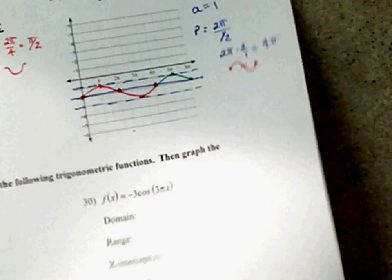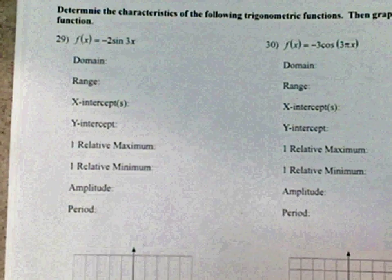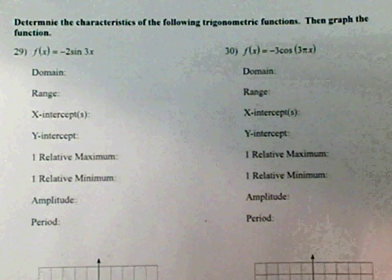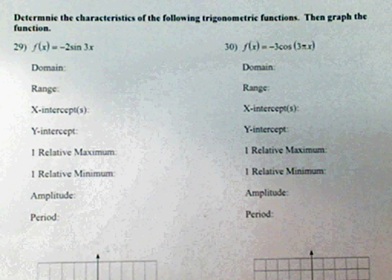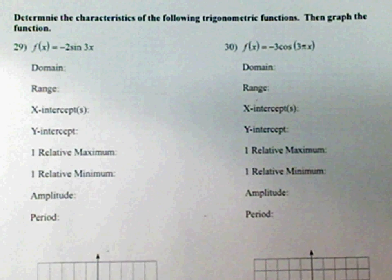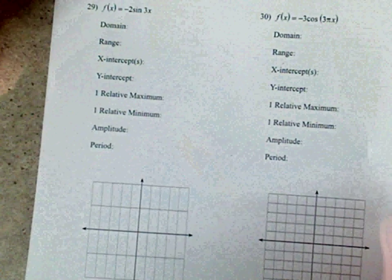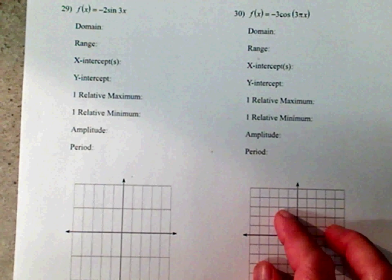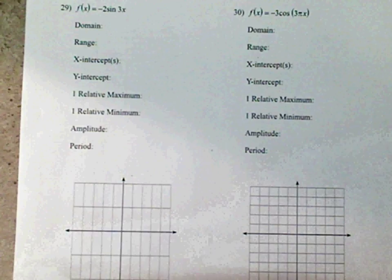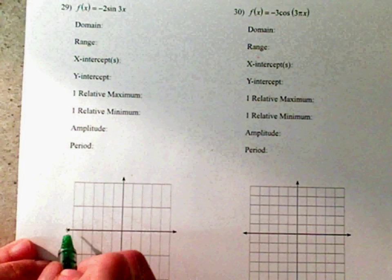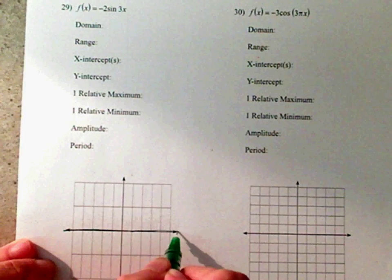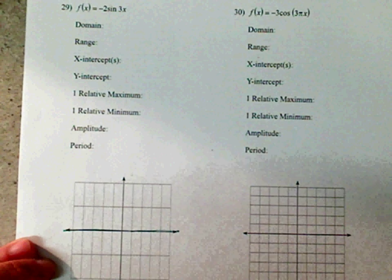Alright. 29. On 29, you are going to graph this function, and then we're going to determine the characteristics. So I'm going to make this a little bit smaller, so you can kind of see the graph, as well as the characteristics that we're going to go over. Here we go. Do the graph first. Notice there's not a vertical shift. So it's right here at 0 at the x-axis.